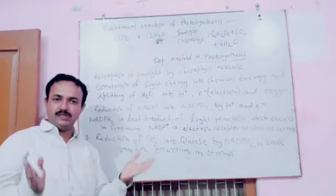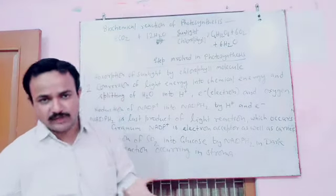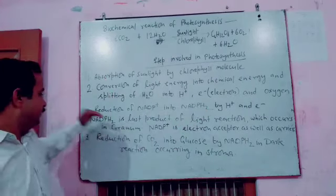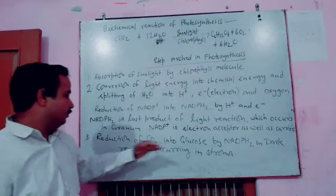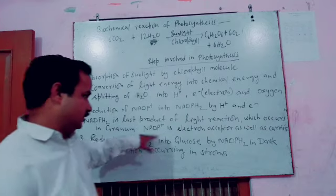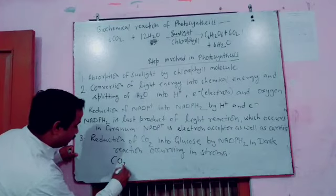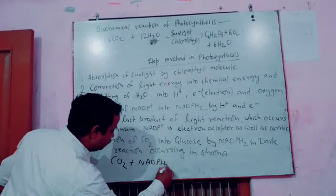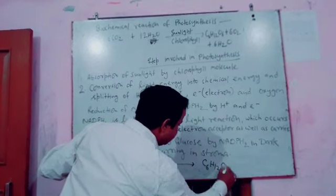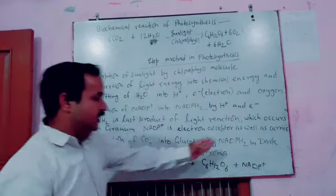Chloroplast is a cell organelle found in the leaf cells. NADP acts as an electron acceptor as well as an electron carrier. The light reaction occurs in the granum, and NADPH2 is its final product. The third step is the reduction of CO2 into glucose. CO2 is reduced using the NADPH2 produced in the light reaction. The reaction involves CO2 + NADPH2, which ultimately produces C6H12O6 (glucose), with NADPH2 being oxidized back in the process.